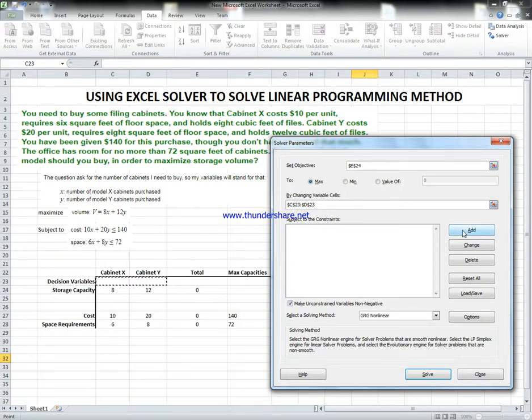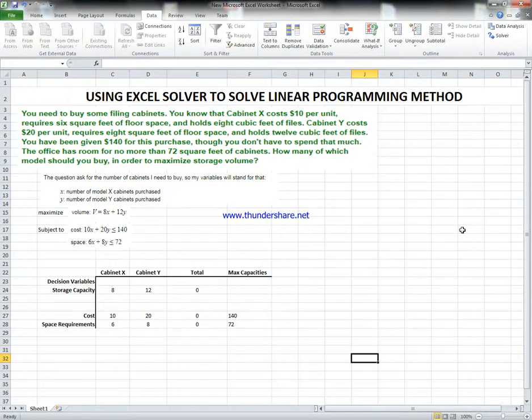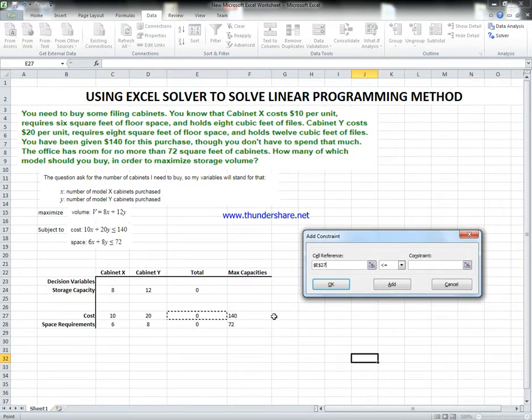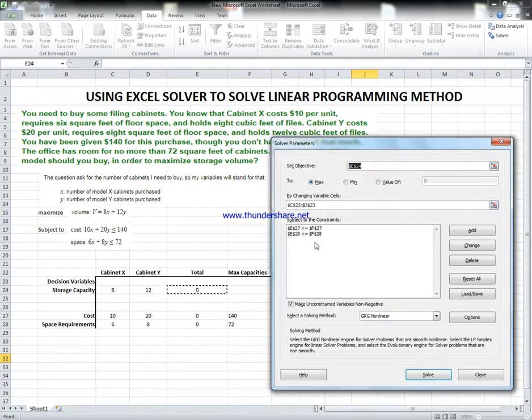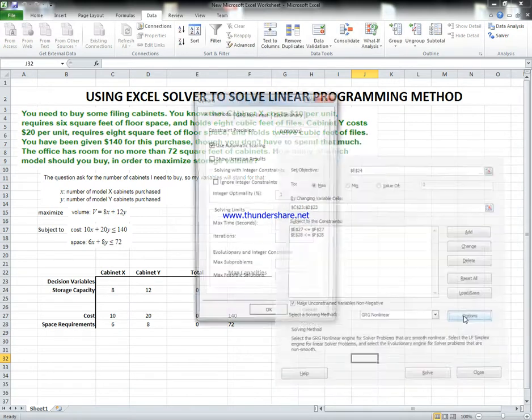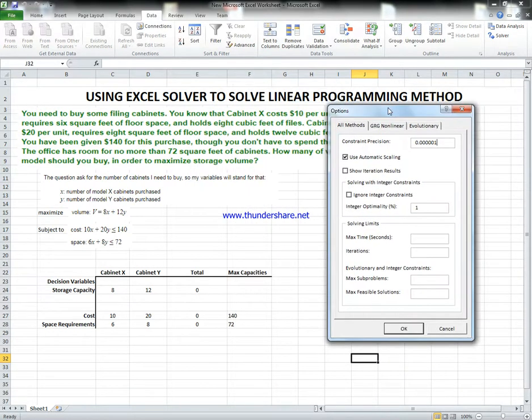We're going to add constraints. We have two constraints. The first one is cell reference: this one should be less than or equal - we could consider equal, greater than or equal, integer, or binary. Then the constraint, the total we have is 140. Add another one: space requirement is less than maximum available. For both of them, we click on Options. We assume this is a linear programming model and the model is non-negative integer. We leave this for a while - we're just focusing on the linear programming model now. We say okay for this.